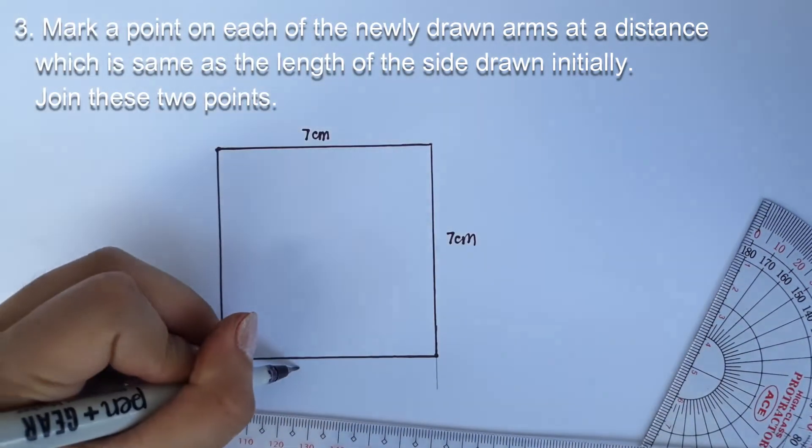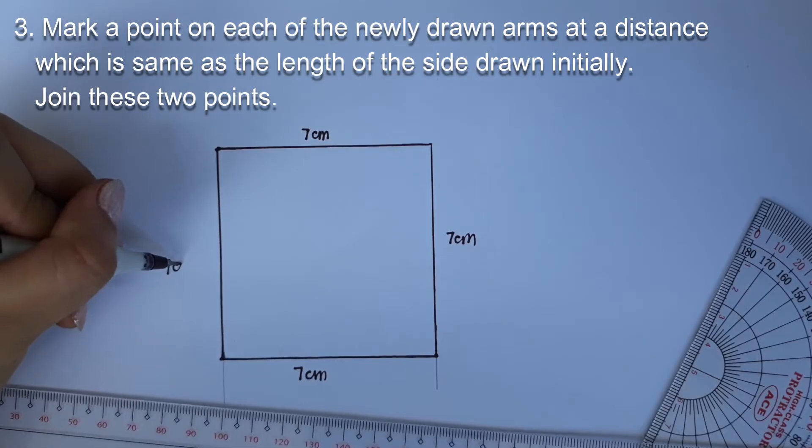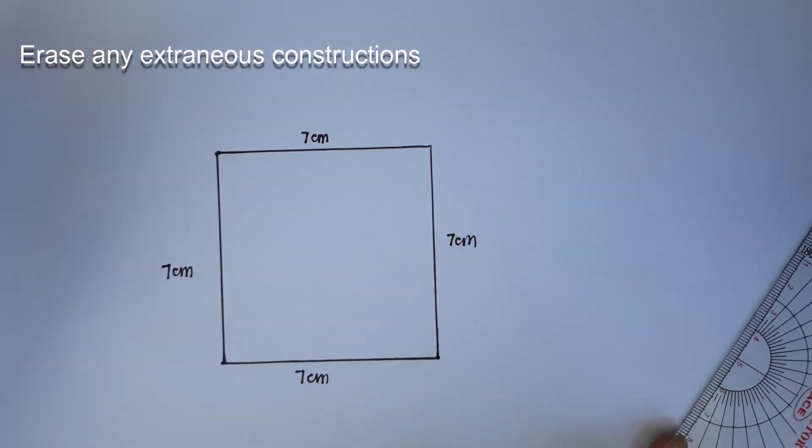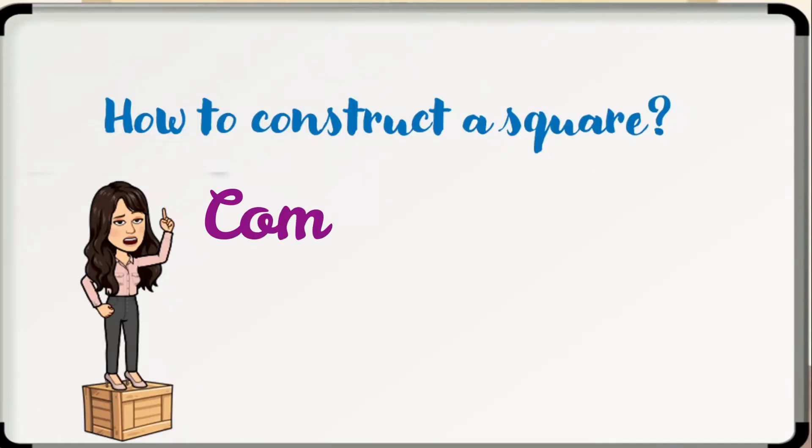Step 4. Join these two points. There you have it. You just drew a perfect square. Erase any extraneous constructions if you wish. Now, let's construct a square using the compass method.